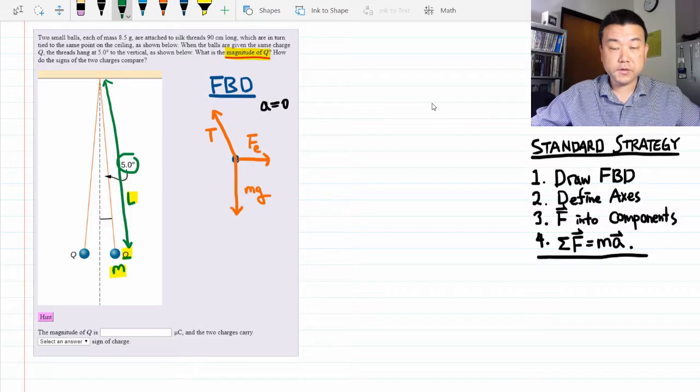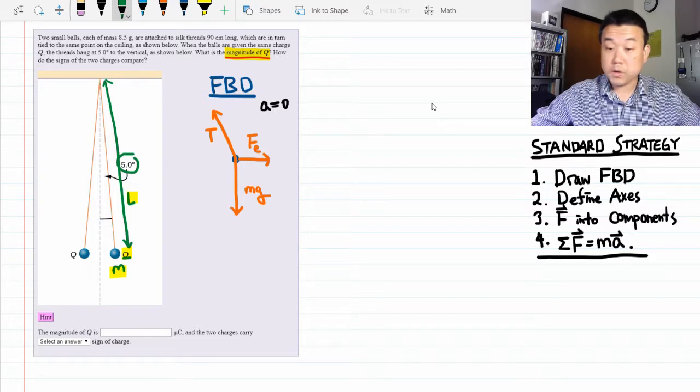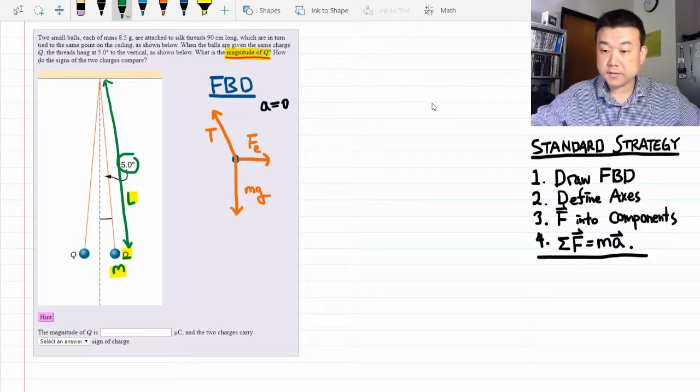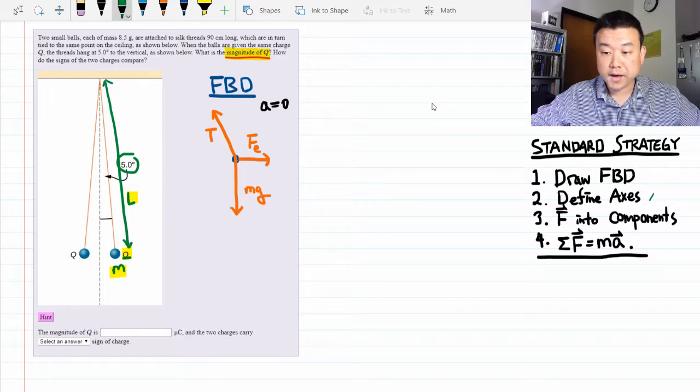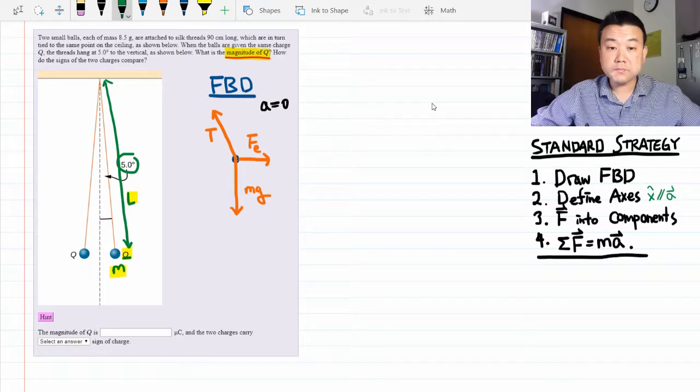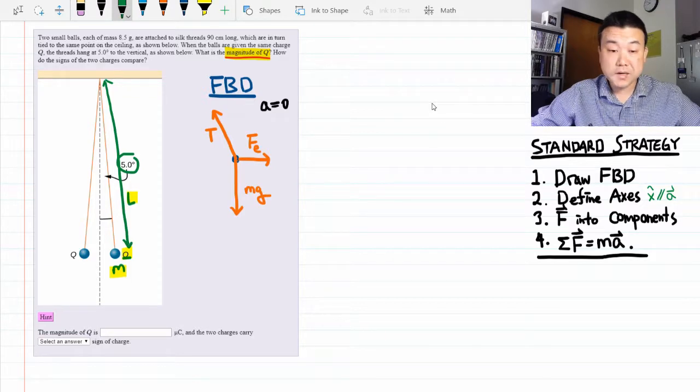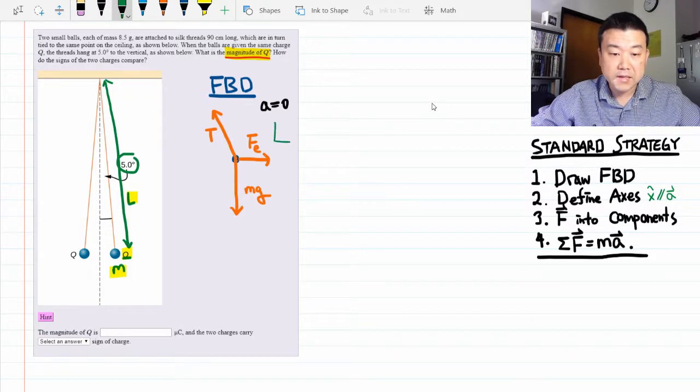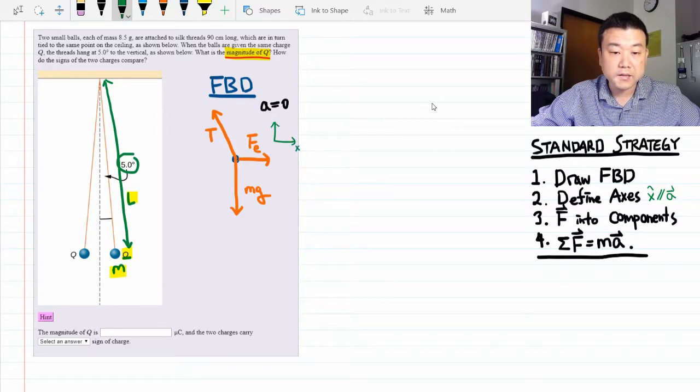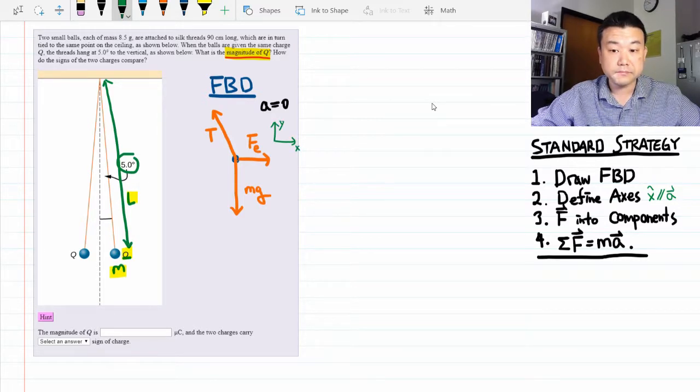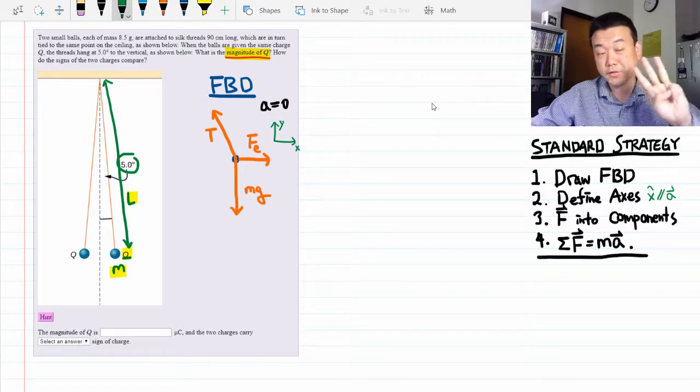Now, step number two, I need to define the axes. We usually define the axes so that one of the two axes is parallel to the acceleration. Here, since we have zero acceleration, it sort of makes sense to pick the axes that kind of line up with the forces, so that most forces are either along the x direction or the y direction. This makes our job in step number three easier.